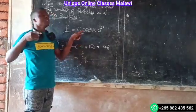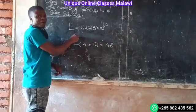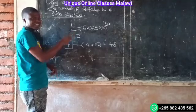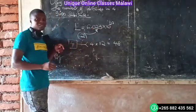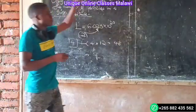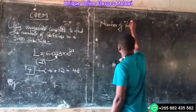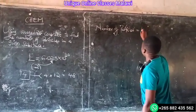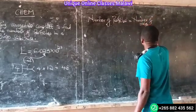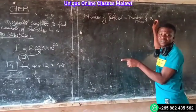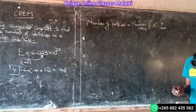In one mole of any substance, we have 6.023 times 10 to the power of 23. That is Avogadro's number — the Avogadro constant.